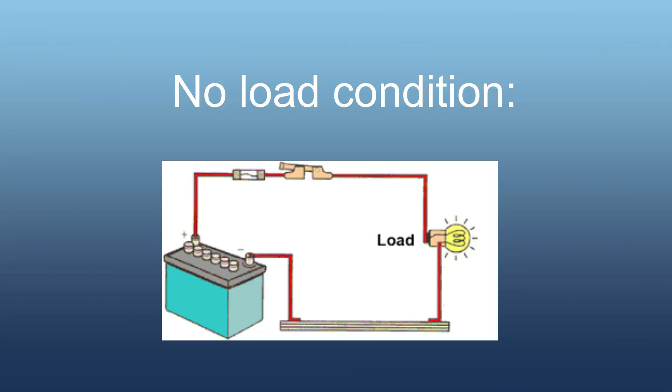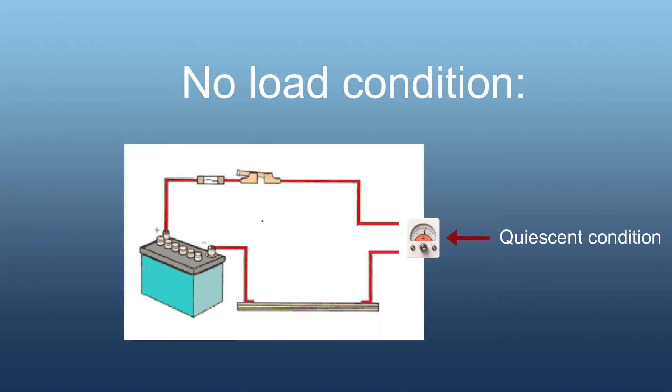Before moving further, I want to explain about no-load condition. In the figure, we are seeing a bulb connected to a battery. Here, bulb is the load. It will consume power from battery which will lead to flow of current. If we remove the load, that is the bulb, there will be no flow of current. Now, this circuit can be said to be at quiescent condition.